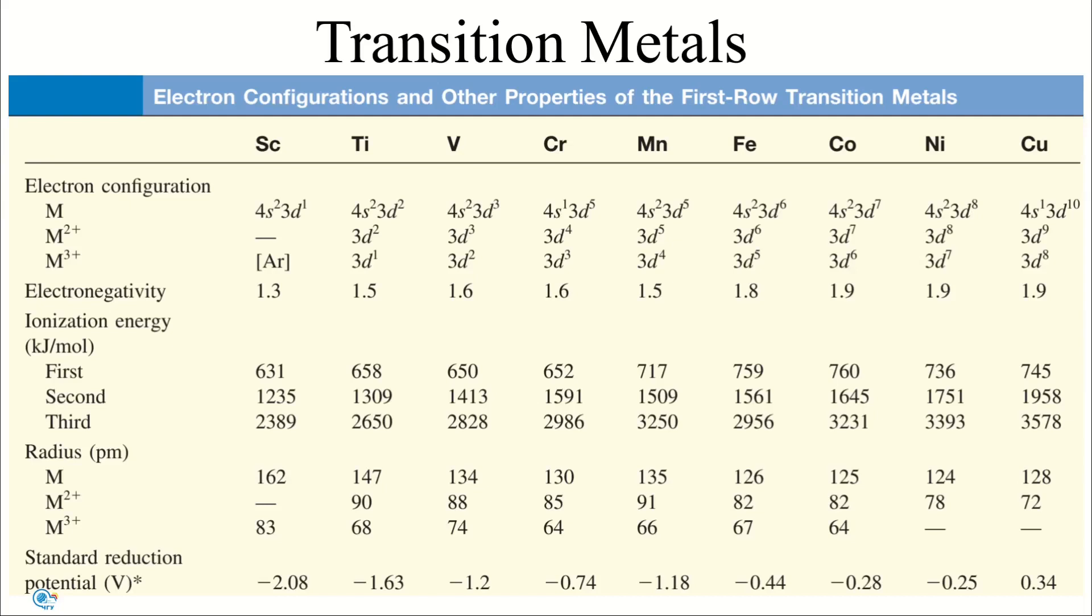The reason for this trend can be understood by examining the ionization energy plots. In general, the ionization energy increases gradually from left to right. However, the third ionization energy, when the electron is removed from the 3d orbital, increases more rapidly than the first and second ionization energies.